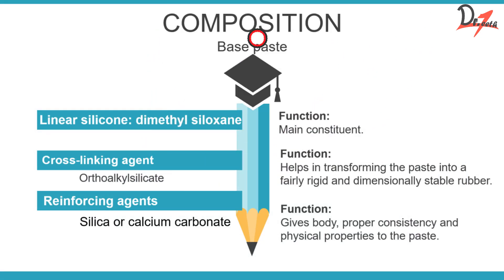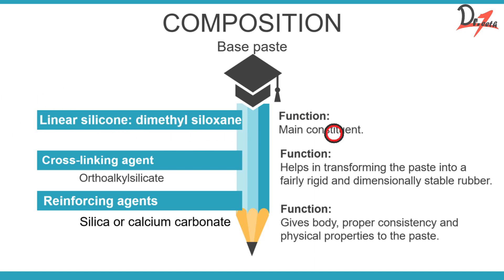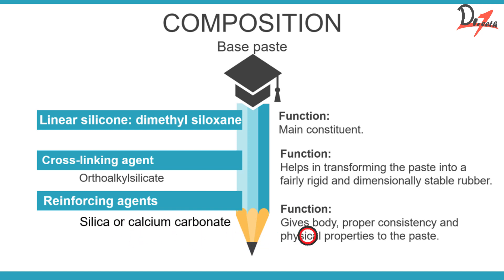Condensation silicone is available in a two-paste system — a base paste and a catalyst paste — where one is putty consistency and one is available in a tube. In the base paste, the main constituent is the linear silicone, which is dimethyl siloxane. There is also a cross-linking agent, orthoalkyl silicate, which helps transform the paste into a rigid and dimensionally stable rubber. Reinforcing agents such as silica and calcium carbonate give the paste its body, consistency, and physical properties.